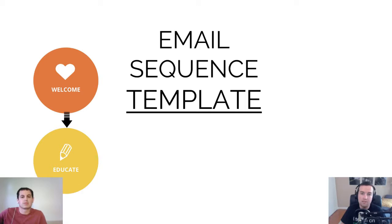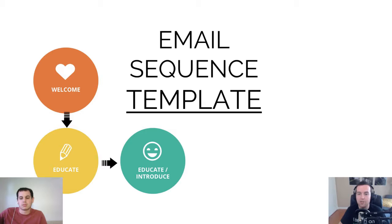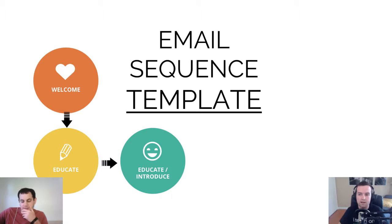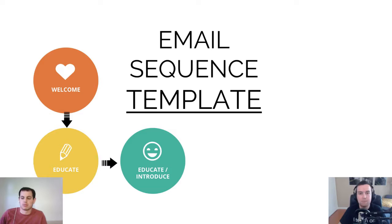The next couple emails are educational. You don't want your first email to be 'hey, I'm selling something.' You want to educate — teach them something about what they signed up for. For example, I have sequences starting when someone signs up for my free YouTube course. In my first educational emails I give them tips and advice about how to improve their YouTube channels — it's not about selling, it's about educating. The second or third email is to educate and introduce the product — still educational, but maybe just mentioning that you have a course on this topic.